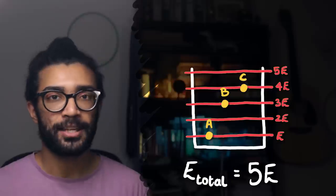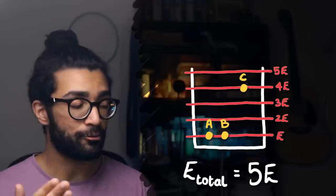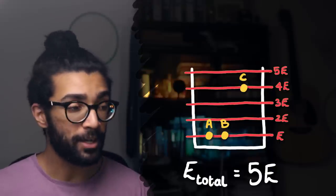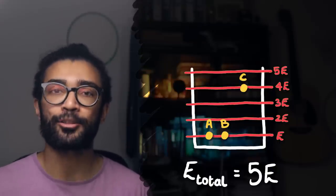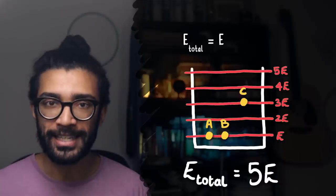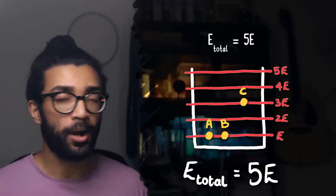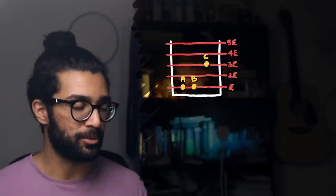And we could also say, for example, that particle B is in the lowest possible energy level as well. This means that the remaining particle, particle C, must, by necessity, be in the 3E energy level. Because now the particles in the box contain 1E plus 1E plus 3E worth of energy, which is 5E in total. So this is one possible configuration that our particles could be in, in terms of how much energy each of them carries.